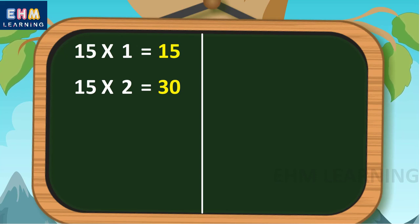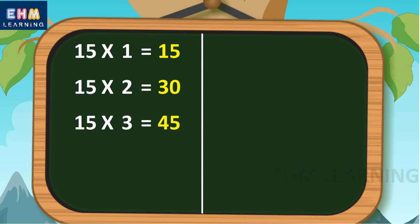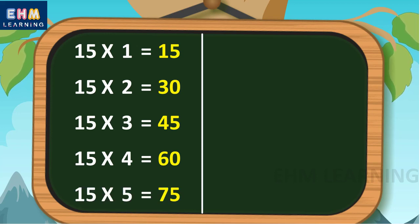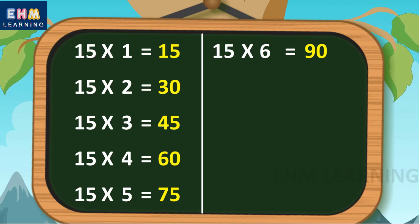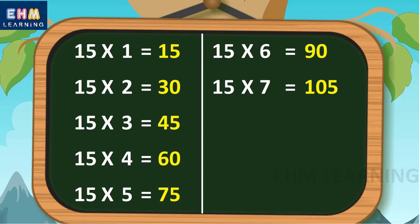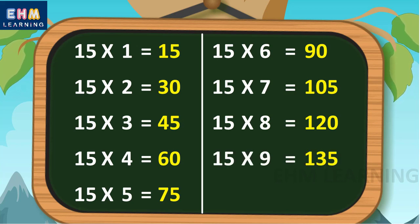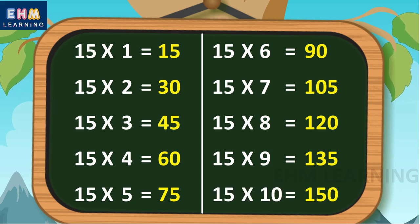Let's learn again. Fifteen ones are fifteen, fifteen twos are thirty, fifteen threes are forty-five, fifteen fours are sixty, fifteen fives are seventy-five, fifteen sixes are ninety, fifteen sevens are one hundred and five, fifteen eights are one hundred and twenty, fifteen nines are one hundred and thirty-five, fifteen tens are one hundred and fifty.